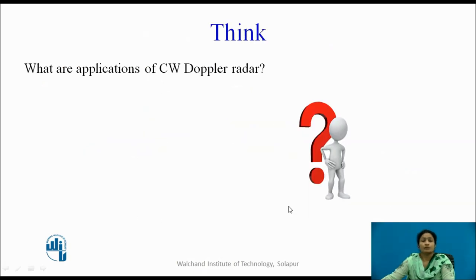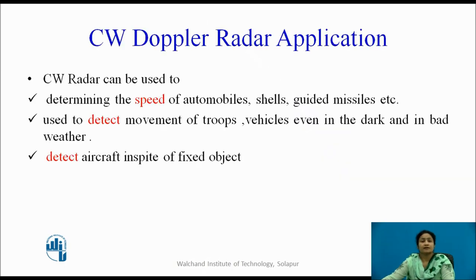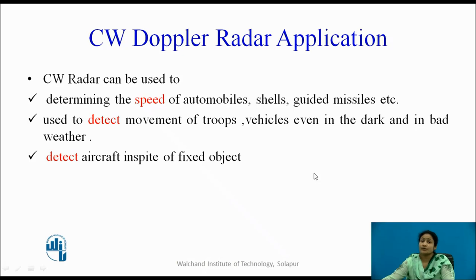The applications of the Continuous Wave Doppler radar system include determining the speed of automobiles, shells, guided missiles, and similar moving objects. It can also be used to detect the movements of troops and vehicles, even in darkness or bad weather conditions. Additionally, a continuous Doppler radar system can be used to detect aircraft despite the presence of fixed objects.